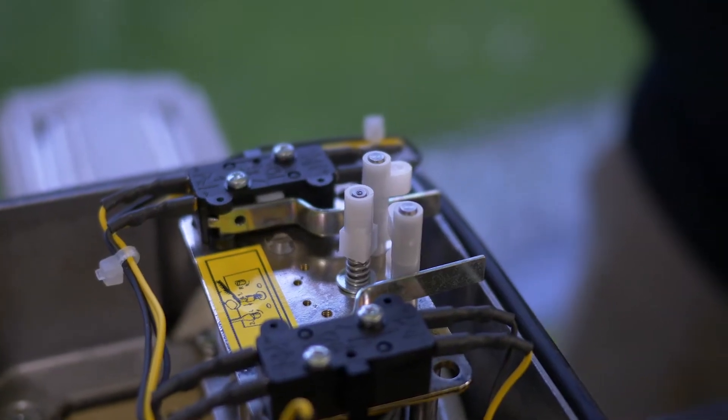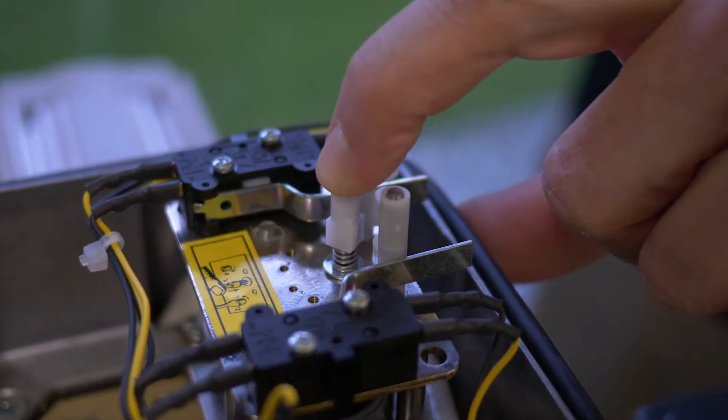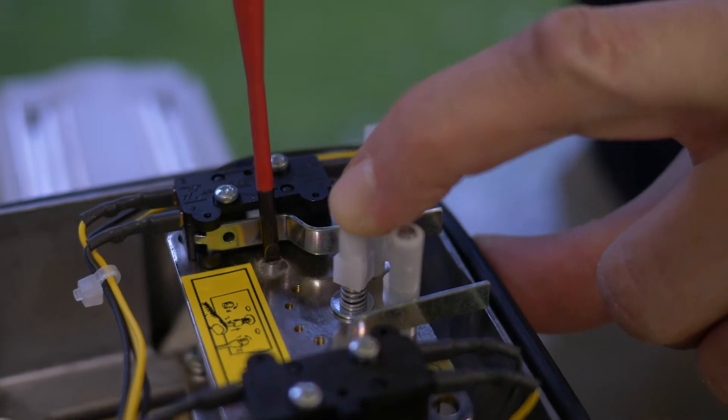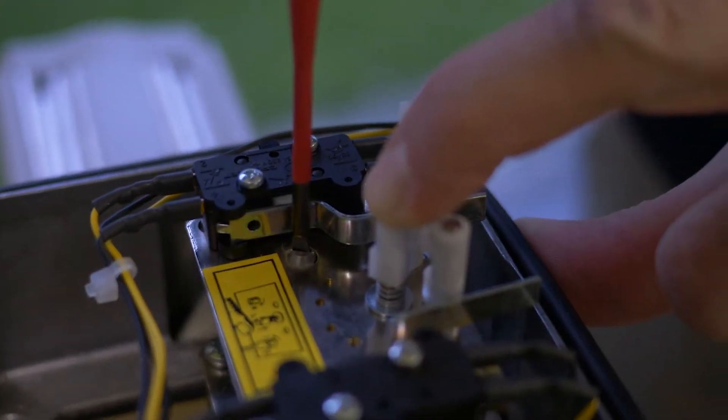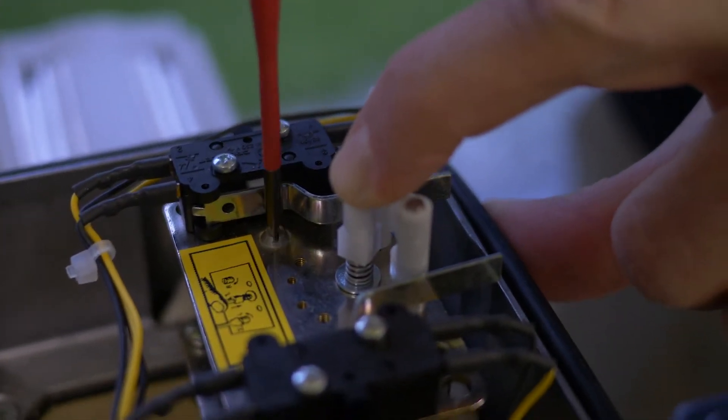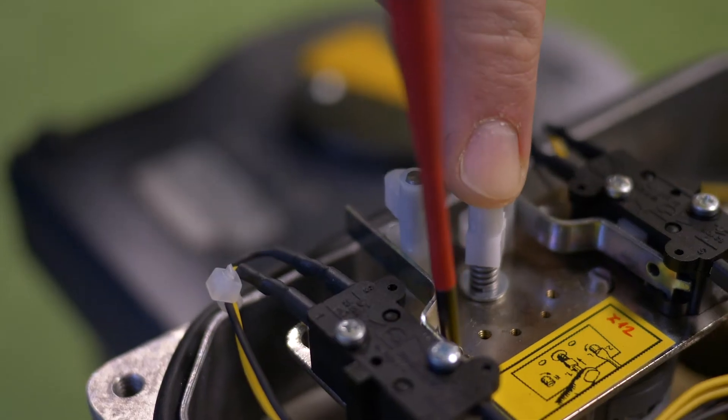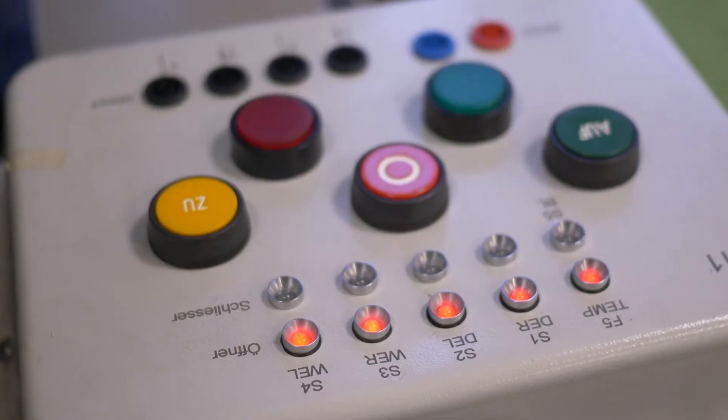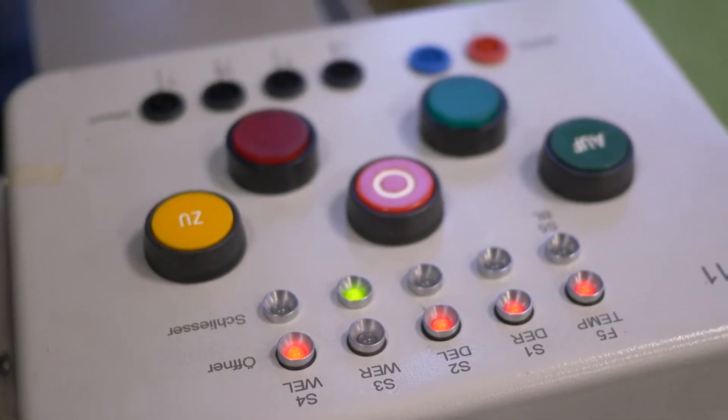To set the close end limit switch, press the white cam and insert the screwdriver on the screw and turn as shown on the yellow label till the switch is pressed. Then release the white cam and check if it's fixed.